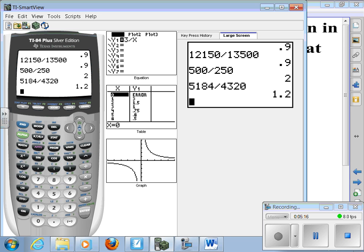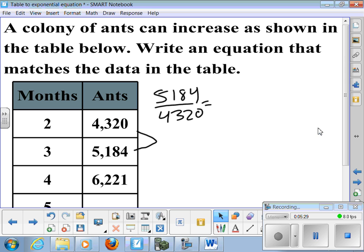5,184 divided by 4,320. Well, that says 1.2, meaning that it has increased by 20%. It's increased by 0.2, which is 20%. So there's 20% more ants in month 3 than there was in month 2.